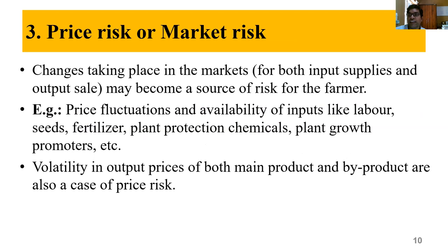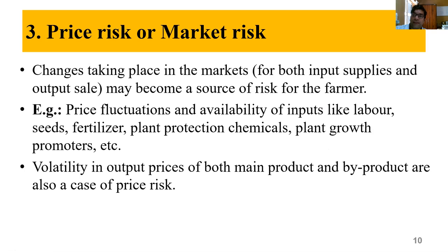Price risk or market risk: changes taking place in markets — variations in price or variation in the buying behavior of traders — may act as risk sources. We have price fluctuations of harvested commodities as well as price fluctuations of labor, seeds, fertilizer, plant protection chemicals, and plant growth promoters. Also the availability of inputs: if the farmer needs a good quality pesticide and it is not available, that is also market risk. The farmer is ready to pay the price, but if the product is not available — that is market risk.